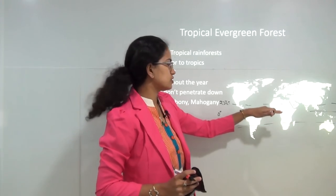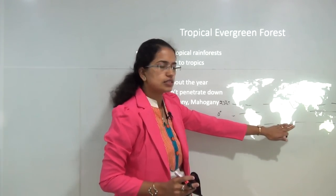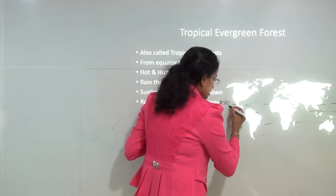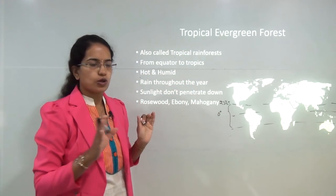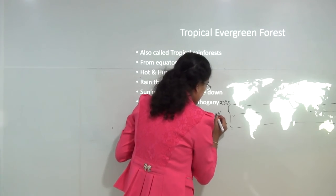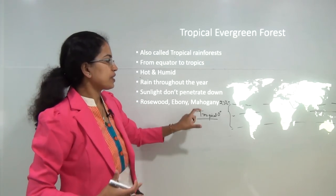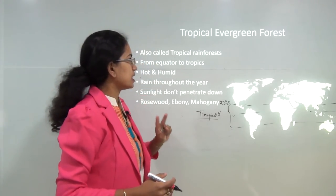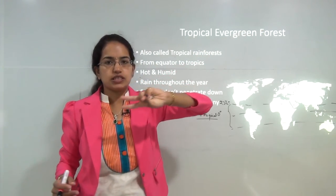All three lines — the Tropic of Cancer, Tropic of Capricorn and the equator — cross the continent of Africa. All regions within 23 degrees north and south of the equator form the tropical region. So whenever I talk about tropical vegetation, tropical forest, or tropical climate, I am focusing on this region. Next, we will differentiate what is evergreen and what is deciduous.